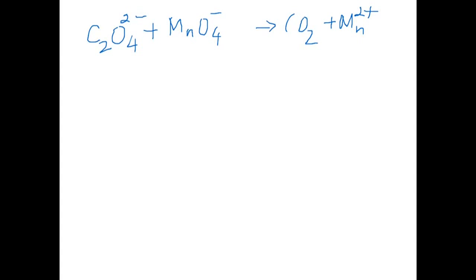In order to balance the equation, the first thing we need to know is the oxidation numbers of elements and identify those elements that are undergoing a change in oxidation. So we are going to find the oxidation number of carbon first in oxalate ions.